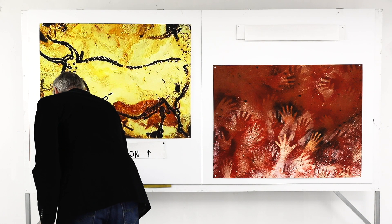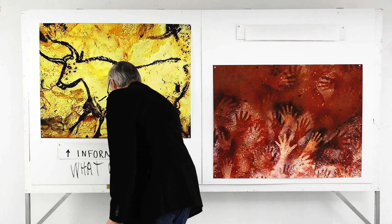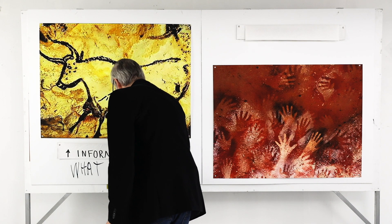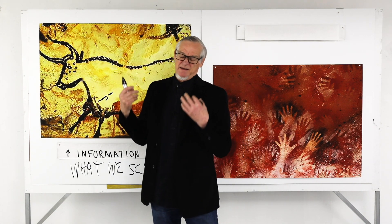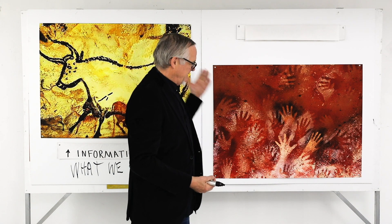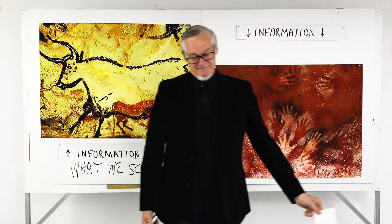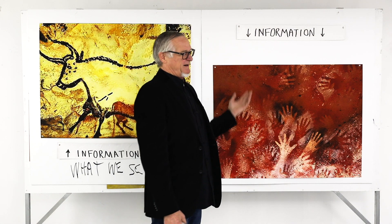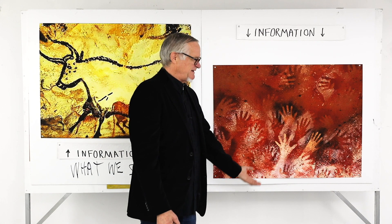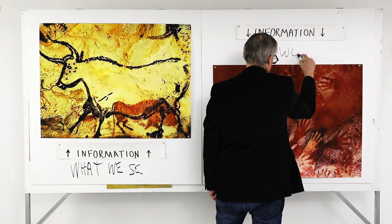What kind of information? This is mark making about what we see. This is a reimagining of what we see. With the hands, we also have information. But what kind of information? This isn't what we see. This is who we are.